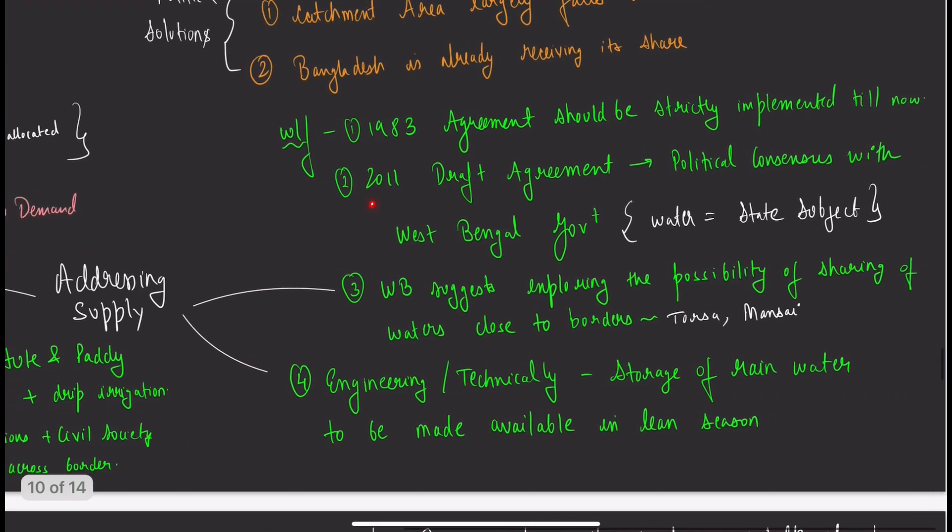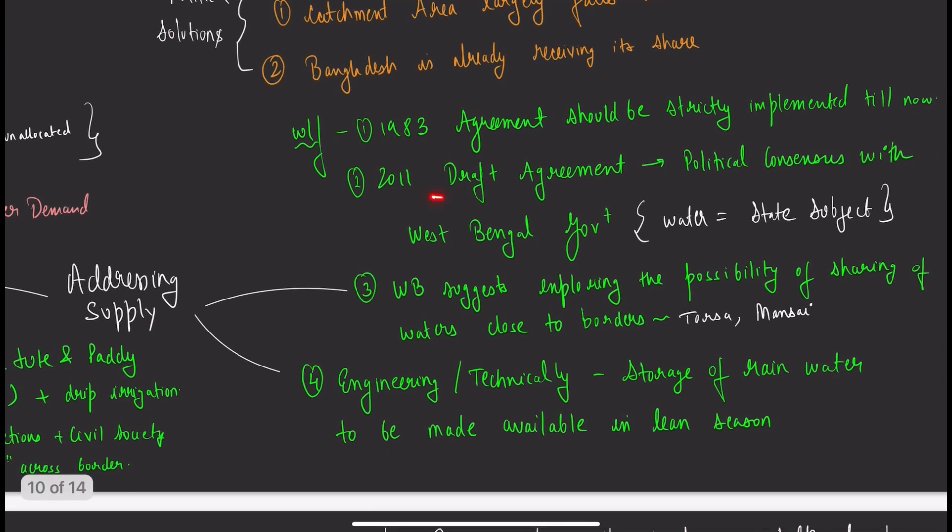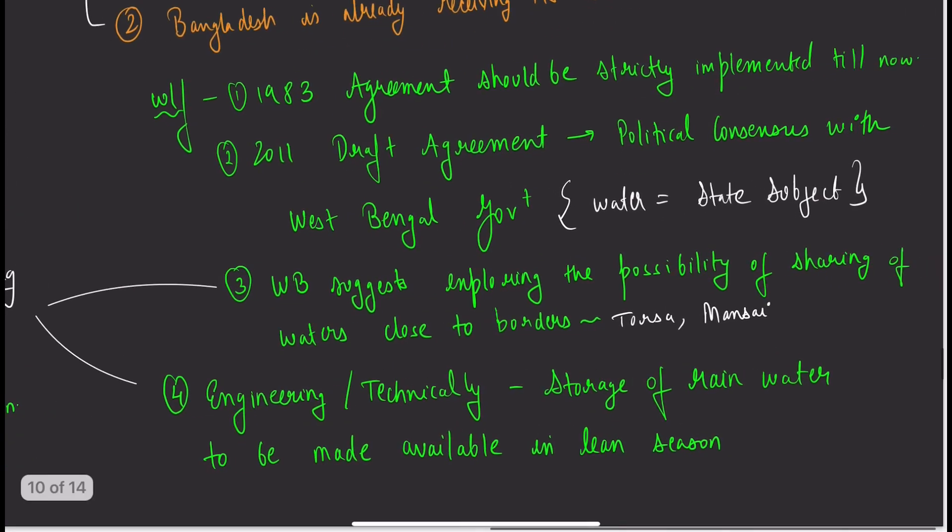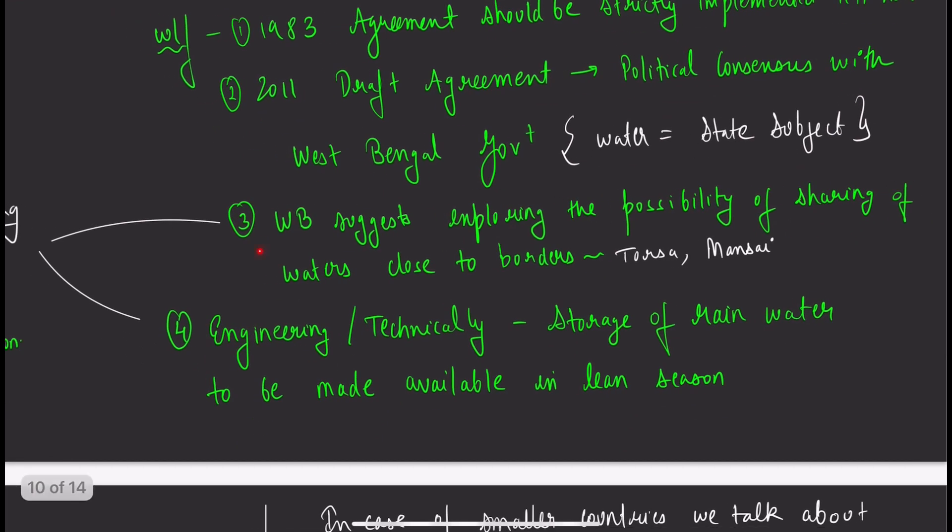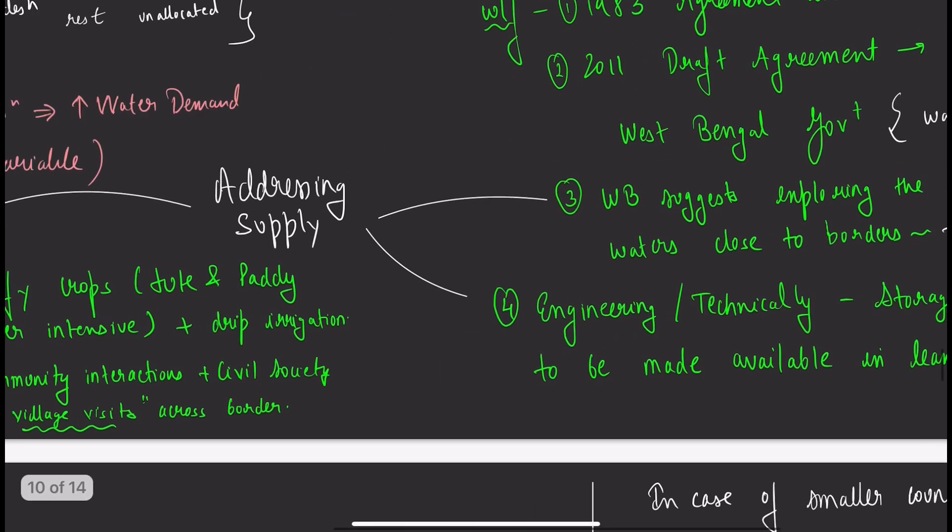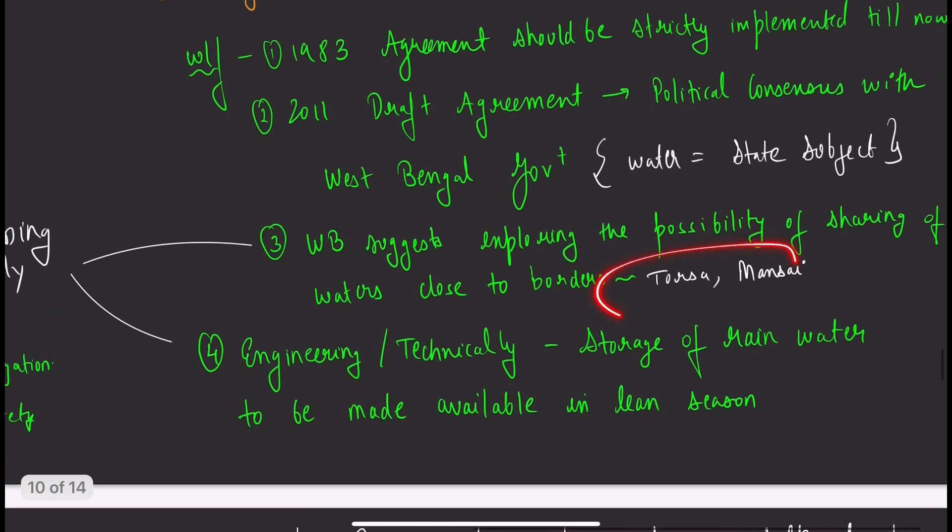There should be political consensus with the West Bengal government, since the 2011 draft agreement is pending. Water is a state subject. West Bengal suggests exploring the possibility of sharing waters close to borders, like Torsa and Mansa rivers, to complete the deficit through these smaller rivers.